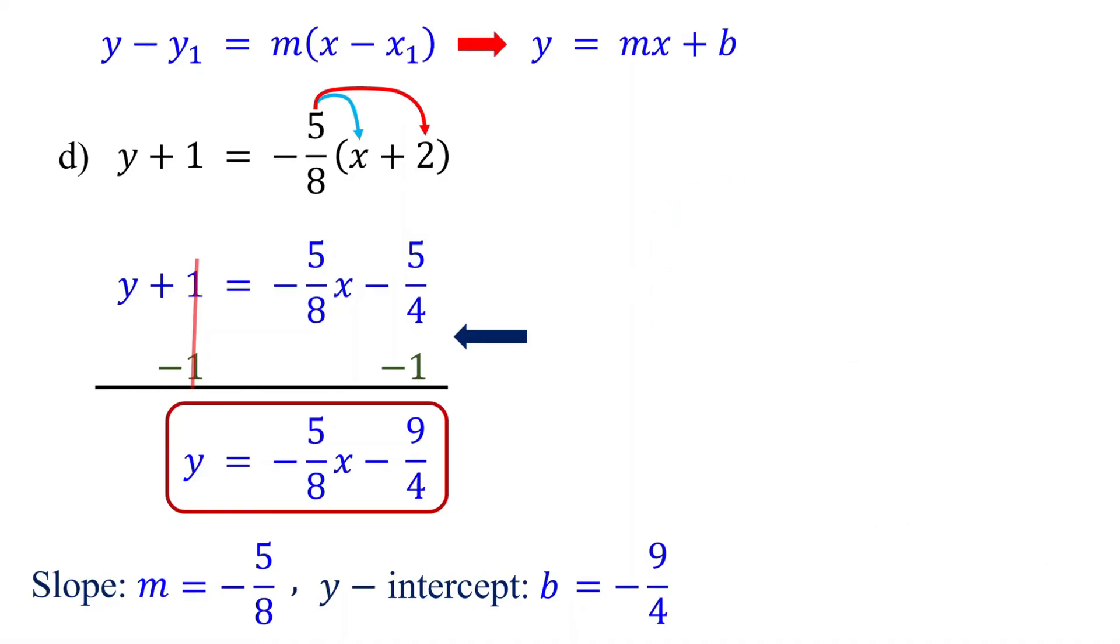To do this, multiply both sides of the equation by the least common multiple of the denominators. The least common multiple of 8 and 4 is 8. So, multiply both sides by 8. 8 times negative 5 eighths becomes negative 5x, as the 8's cancel. 8 divided by 4 is 2, and 2 times negative 5 is negative 10.